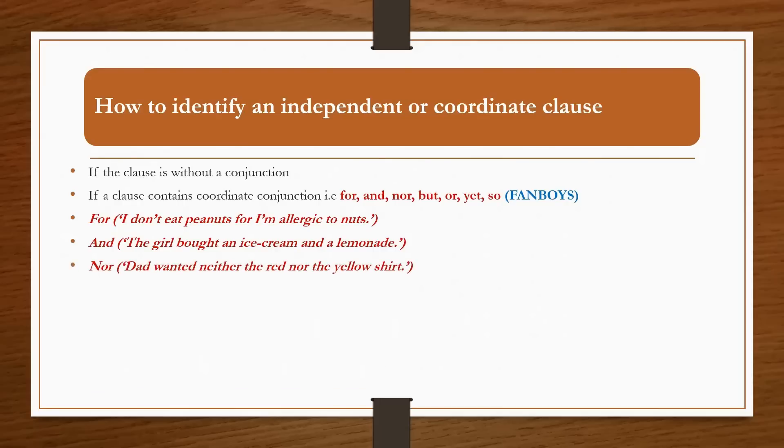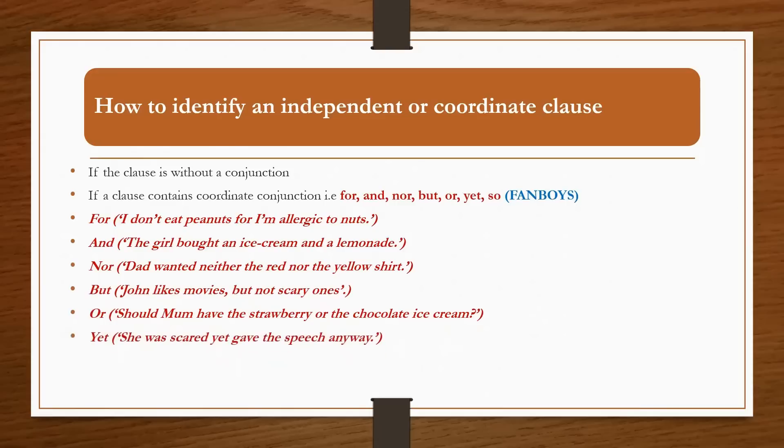Third, with 'nor': Dad wanted neither the red nor the yellow shirt. With 'but': John likes movies but not scary ones. With 'or': Should Mom have the strawberry or the chocolate ice cream? With 'yet': She was scared yet gave the speech anyway. And lastly, with 'so': It started to rain, so I put up my umbrella.